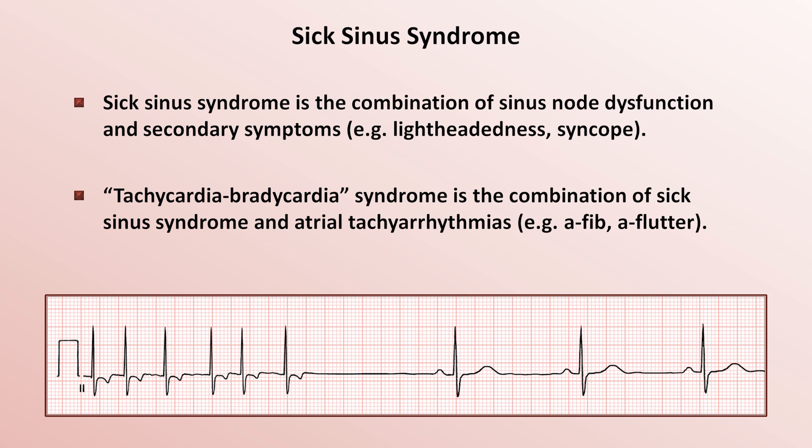The treatment of sick sinus syndrome, assuming the cause is not something easily reversible like beta blocker toxicity, is a pacemaker — that's really the only choice. There are no oral medications that will speed up the heart rate or improve sinus node dysfunction in a reliable and safe manner. Patients with tachybrady syndrome are often given a combination of a pacemaker for the bradycardias and an AV nodal blocking agent such as a beta blocker or calcium channel blocker to prevent rapid ventricular response during the tachyarrhythmias.